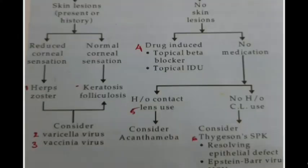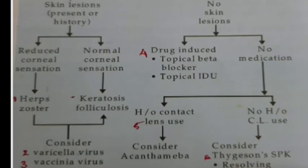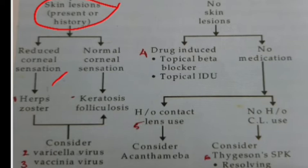How do we approach the diagnosis when you come across a case with a dendritic ulcer? If the patient comes with a dendrite, take a careful history and do a physical examination. If you find some skin lesions, then assess the corneal sensation. If corneal sensations are reduced, it could be herpes zoster virus or varicella zoster infection. If corneal sensations are normal, it could be keratosis or folliculosis.